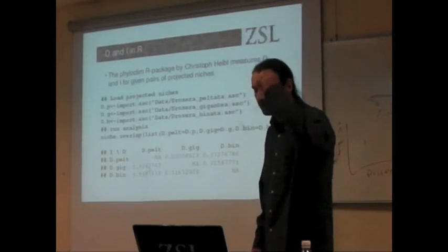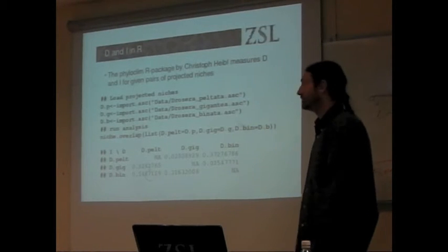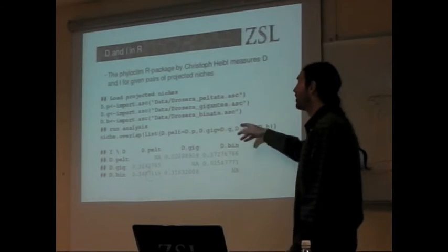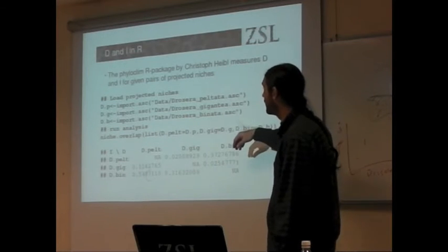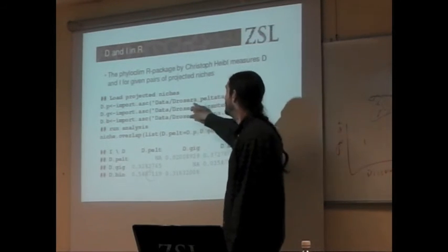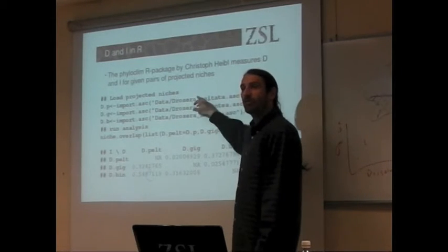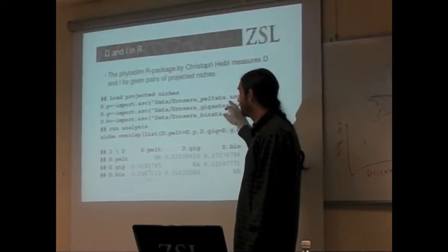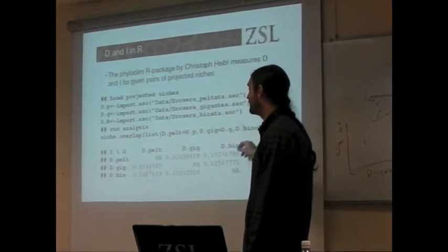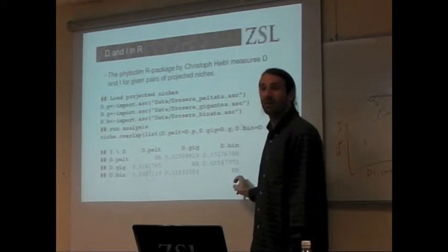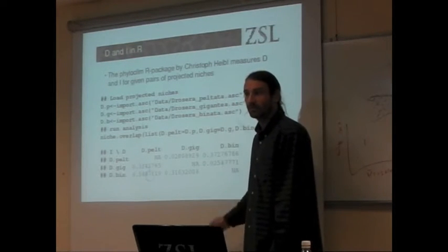And it's very simple to perform this sort of correlation using R. So these are the commands that we're going to use to do this niche overlap. We just read in our map outputs from our modeling. One, two, three. And then we do this command called niche overlap. And that calculates this matrix. And you can just see the matrix to read off the numbers.